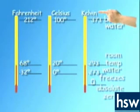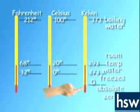There is another scale called the Kelvin scale. This scale is based on absolute zero. Absolute zero would be the point at which all atomic and molecular activity would stop. There would be no kinetic energy. On the Celsius scale, absolute zero is minus 273 degrees.